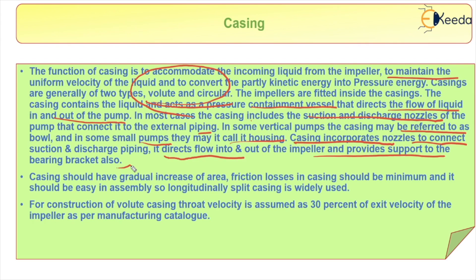The casing should have a gradual increase of area, friction losses in the casing should be minimum, and it should be easy to assemble. Longitudinally split casing is widely used. For construction of a volute casing, throat velocity is assumed as 30% of the exit velocity of the impeller, as per the manufacturing catalog.